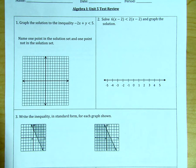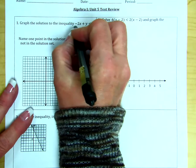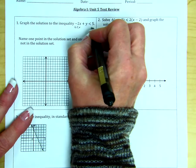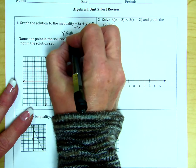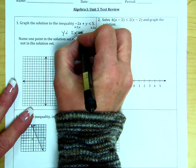We need to graph the solution to this inequality. In order to do that, I'm going to first solve for y, so I have to get rid of the x term. So y is less than 2x plus 5.